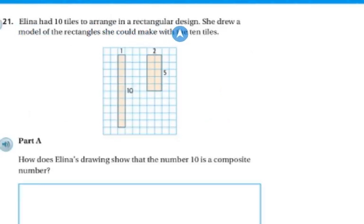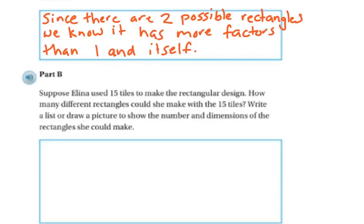Elena has 10 tiles to arrange in a rectangular design. She drew a model of a rectangle that she could make with 10 tiles. So she did 1 times 10, and 2 times 5. How did Elena's drawings show that the number 10 is a composite number? Since there are two possible rectangles, we know that it has more factors than one and itself.